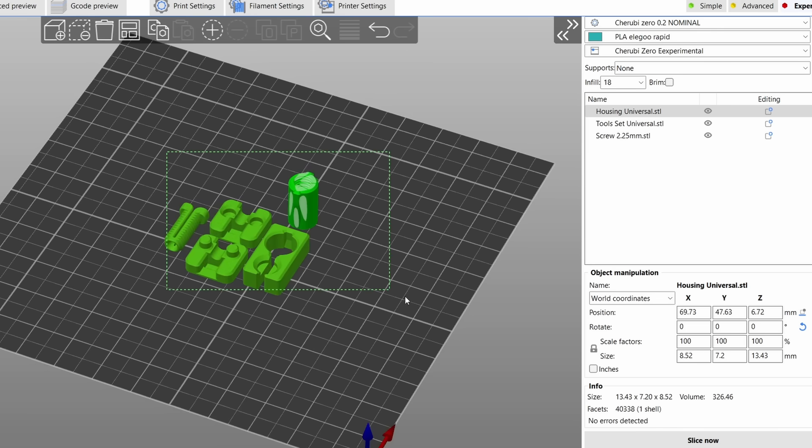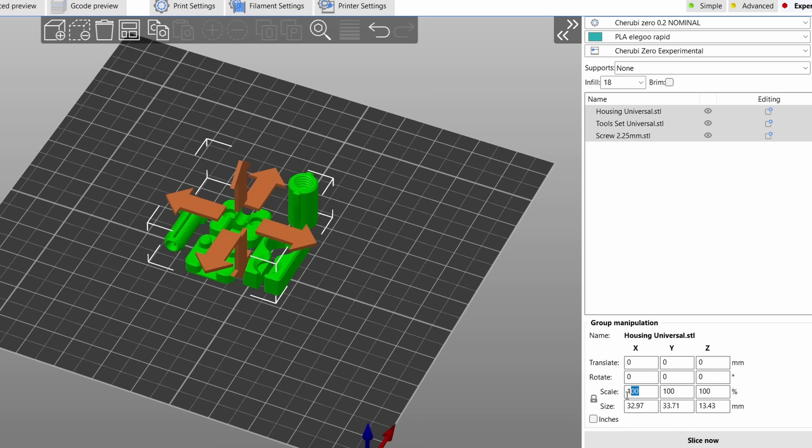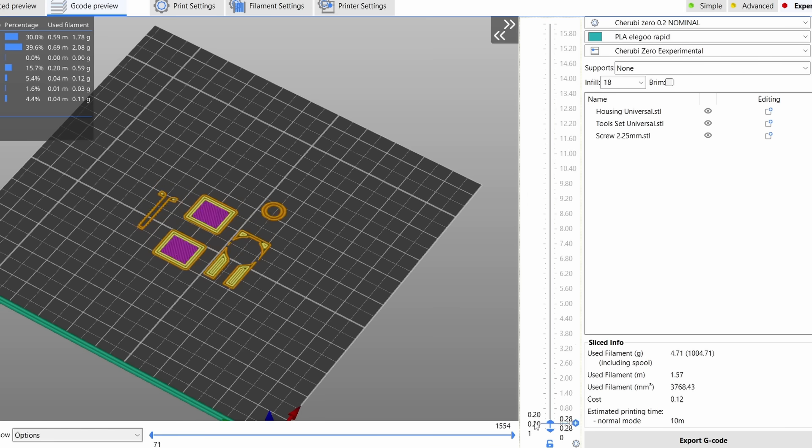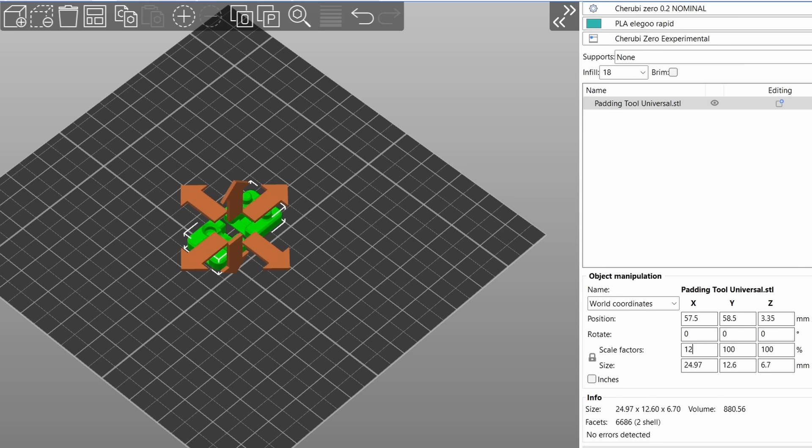Then, import all your parts into the slicing software of choice and scale all the parts by your calculated factor. After this, you should be good to go but make sure you keep the scaling factor on hand as if you ever need to reprint a tool or part, you'll need to scale everything by the same factor to ensure compatibility.